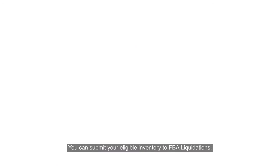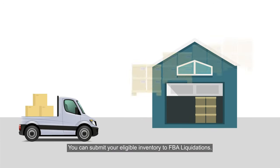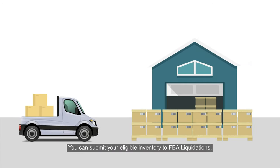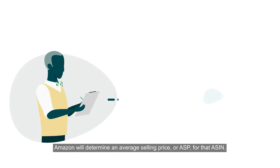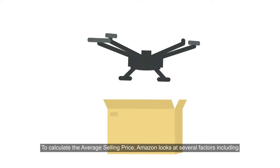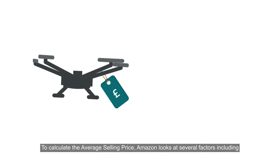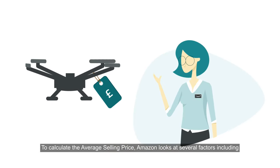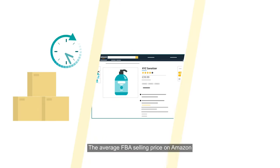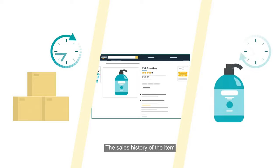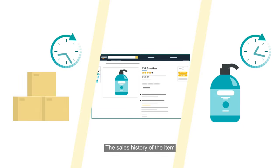You can submit your eligible inventory to FBA liquidations. Amazon will determine an average selling price, or ASP, for that ASIN. To calculate the average selling price, Amazon looks at several factors including your sales history and the average FBA selling price on Amazon.